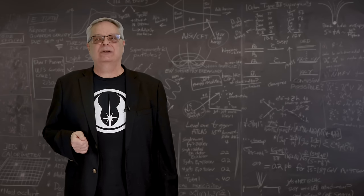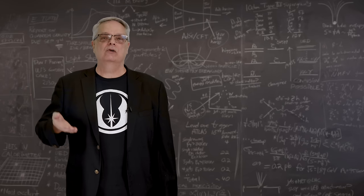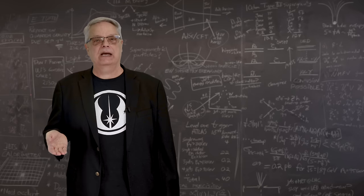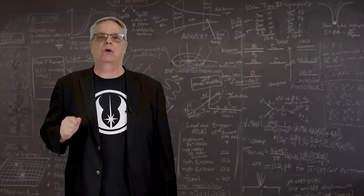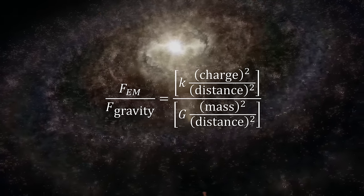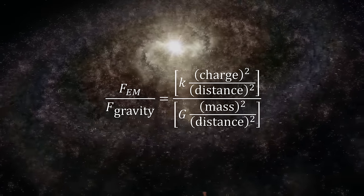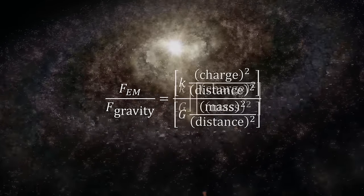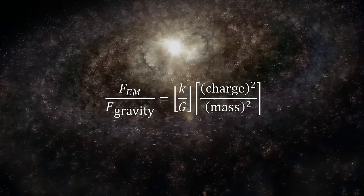We can see what that means by looking at the ratio of the force of gravity and electromagnetism between two identical particles. We take the two equations, take the ratio, and we find that the ratio between gravity and electromagnetism doesn't depend on distance. It's the same everywhere.